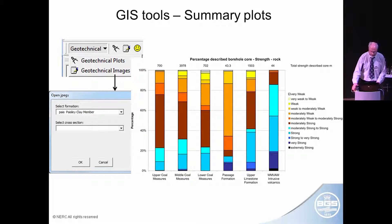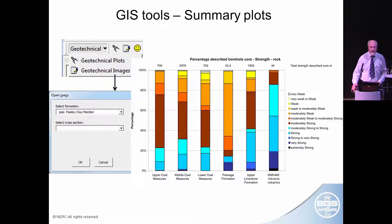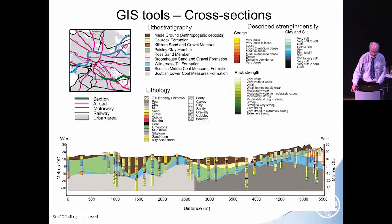Here's an example of a plot that uses the descriptive data we have in the boreholes. You often have materials described as weak — in rocks, from very weak to extremely strong. You won't get that information from laboratory tests, because often the weak stuff doesn't come out of the borehole and you can't test it. So this is a way of visualising, in a very simple way, the differences in rock strength between the different units modelled within the area.